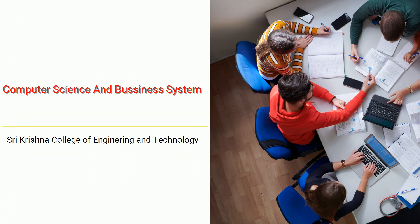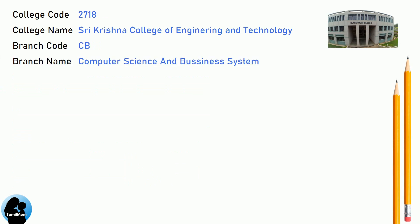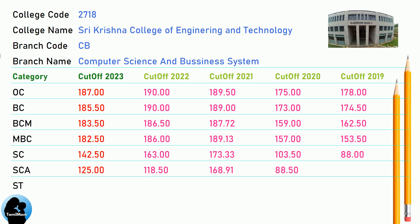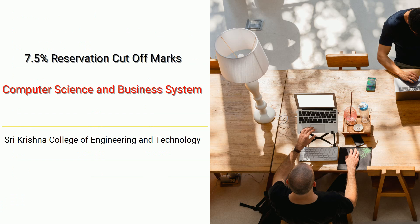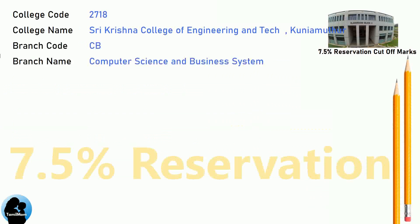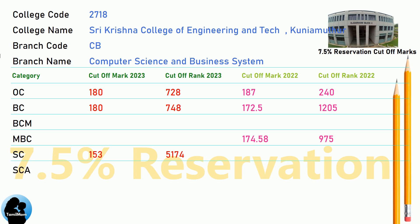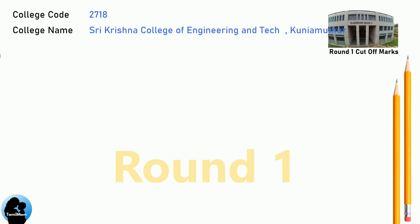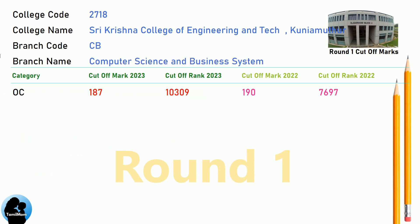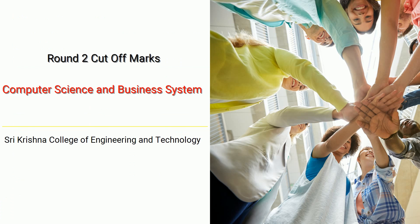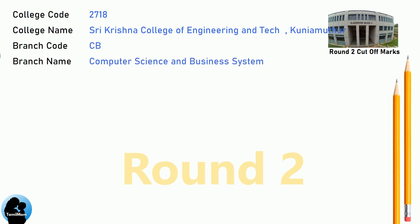DNEA Cut-Off for Shri Krishna College of Engineering and Technology in Computer Science and Business System. DNEA 7.5 Reservation Cut-Off. DNEA Round 1 Cut-Off. DNEA Round 2 Cut-Off for Shri Krishna College of Engineering and Technology in Computer Science and Business System.